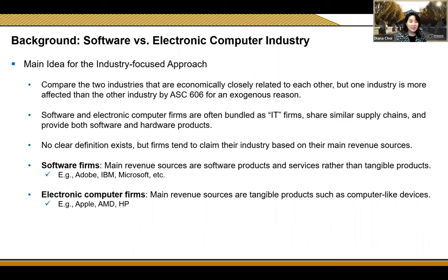Our main idea for the industry-focused approach is that software industries and electronic computer industries are both considered IT firms. They share similar supply chains and provide both software and hardware products. We can look at software firms as those companies whose main revenue sources are software products and services rather than tangible products. Electronic computer firms are companies that sell tangible products like computer-like devices—examples would be Apple, HP, and AMD.